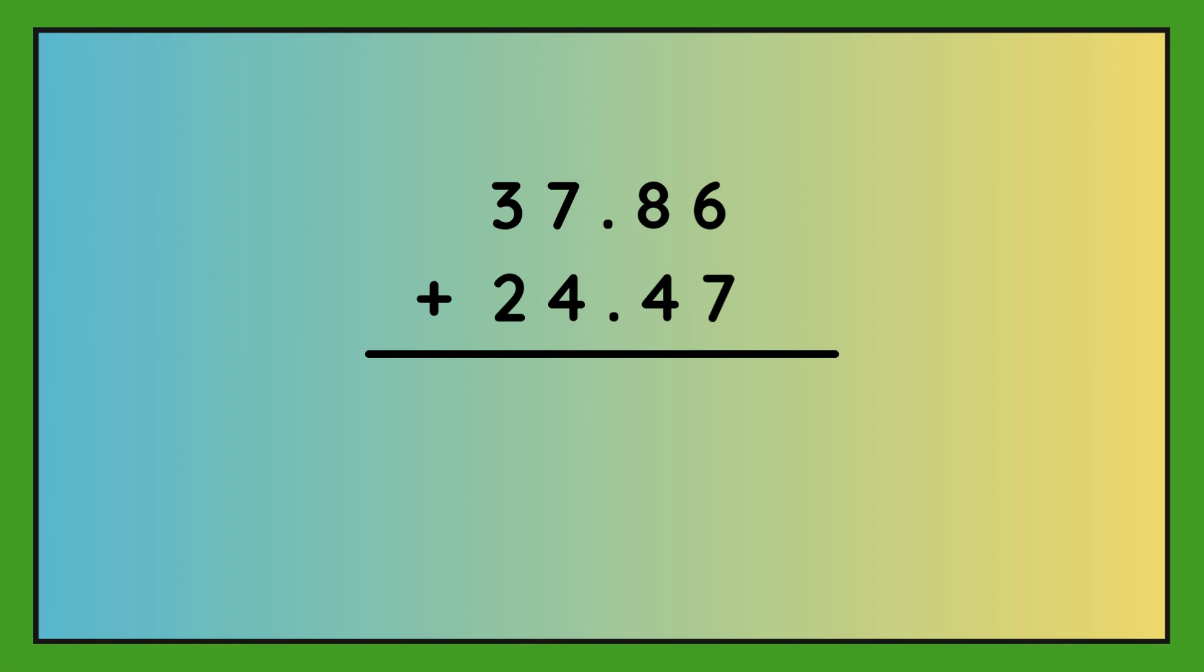Final question. 37.86 plus 24.47. Line up your decimal points and don't forget to put a decimal point in the answer. Pause the video if you want to work it out first.